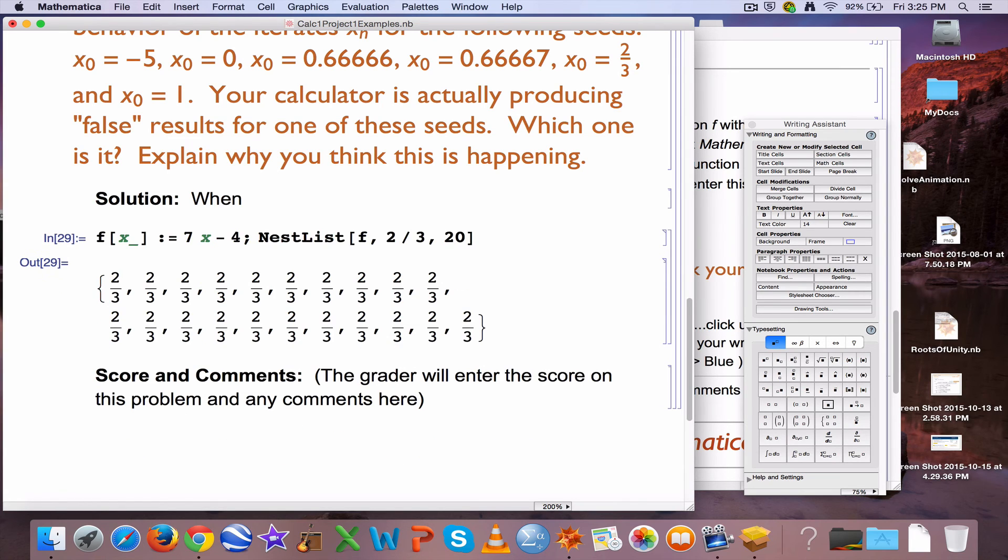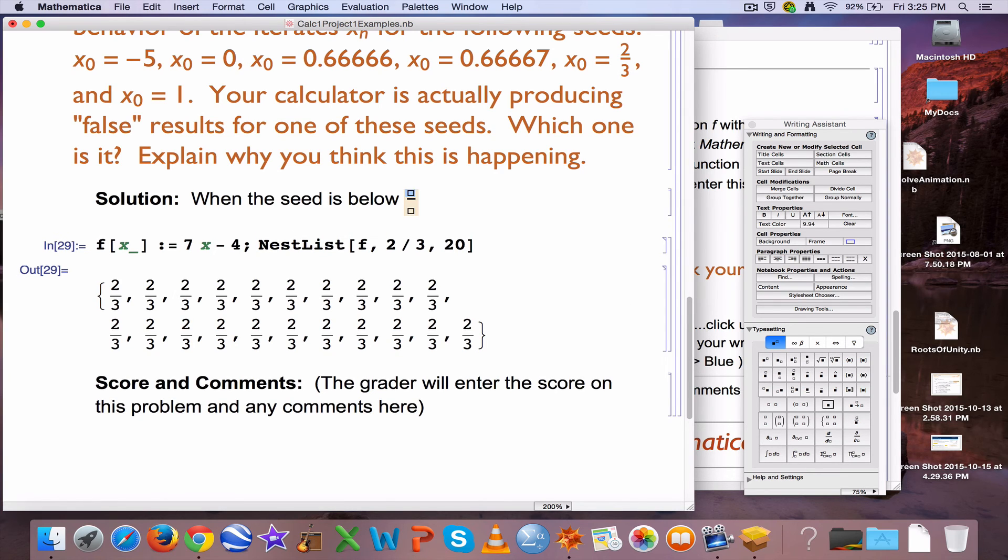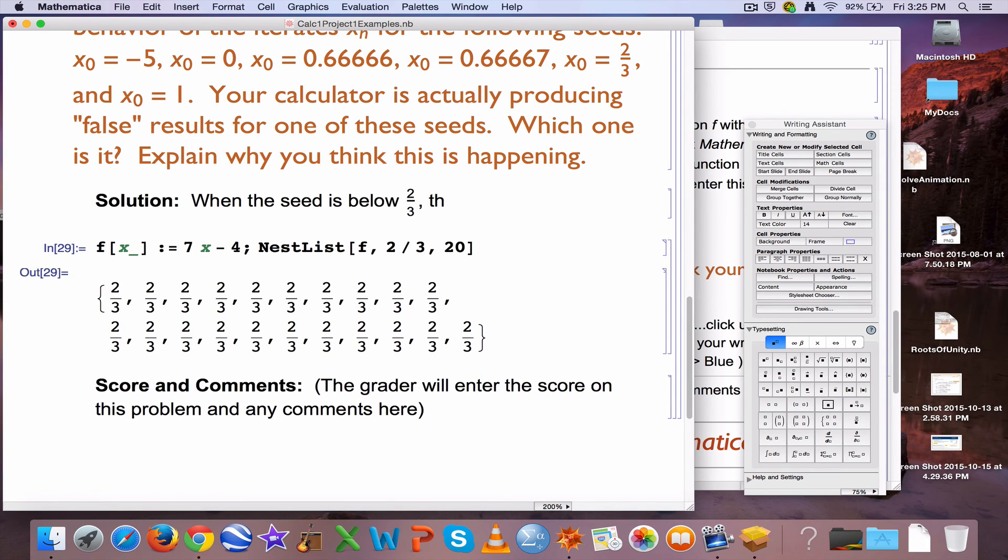So again, you could summarize what happens when the seed is below 2 thirds. And you can make 2 thirds a fraction by clicking this button here if you like. 2 thirds. The iterates go off to minus infinity. You can make a minus infinity if you like. Minus sign, escape, INF, escape.